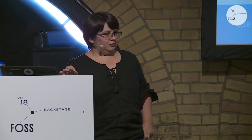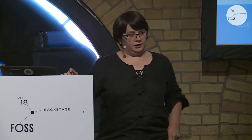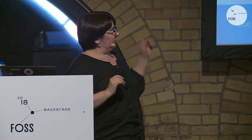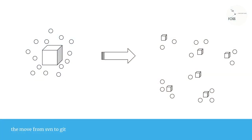Around the same time, we also moved our version control system from SVN to Git. Before that, we were all in one big SVN repository — everyone committing to everything, one shared space. In Git, that was very different. And Conway's Law says that if you split up your infrastructure like that, your community will split up like that too. And surprise, this is exactly what happened.